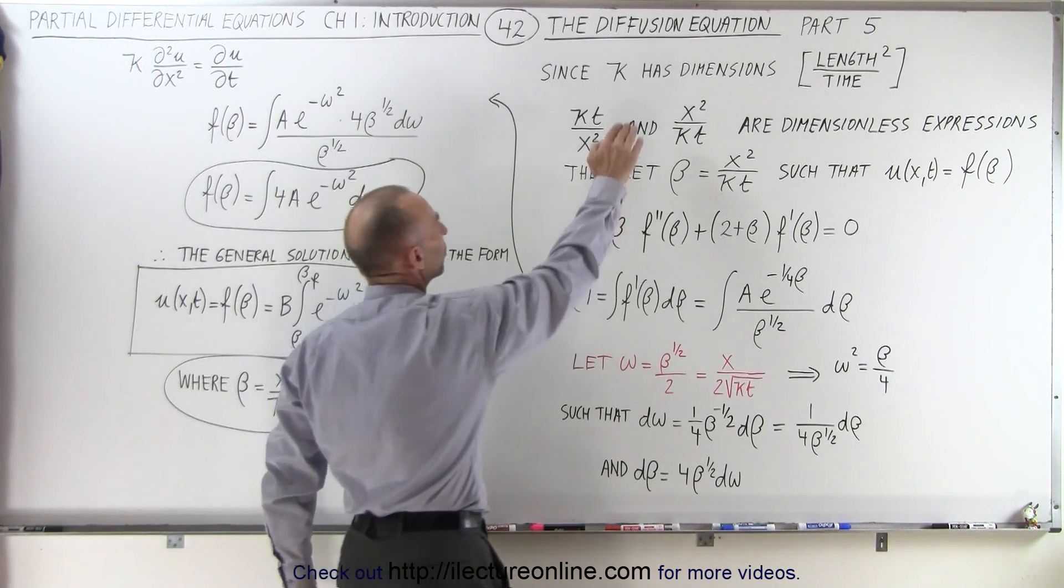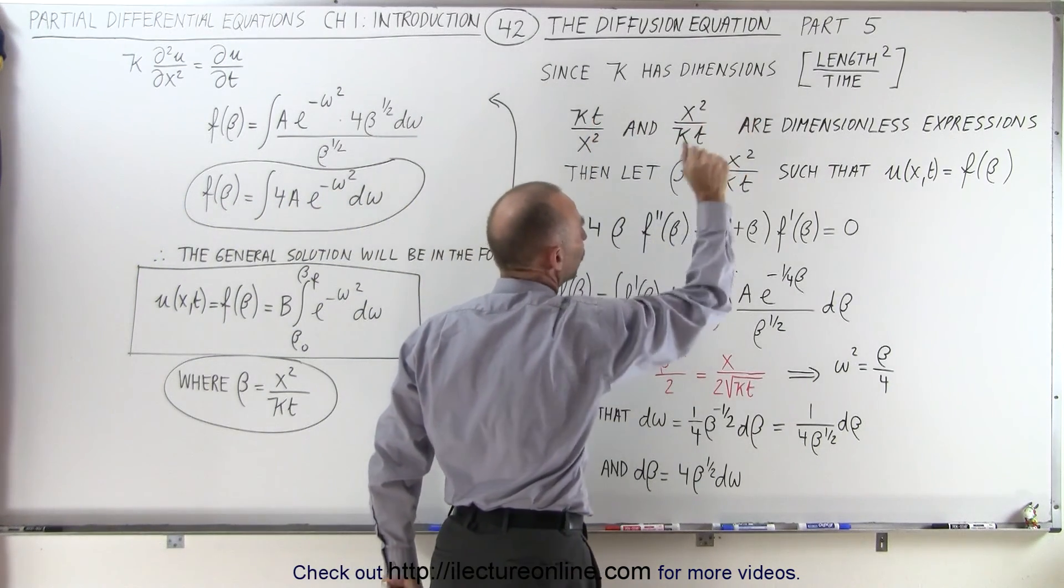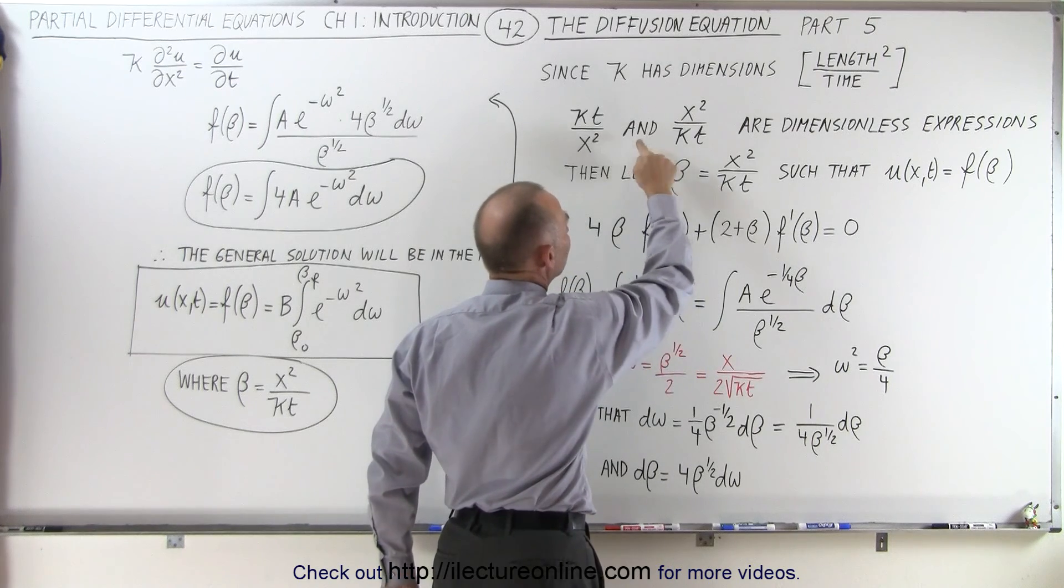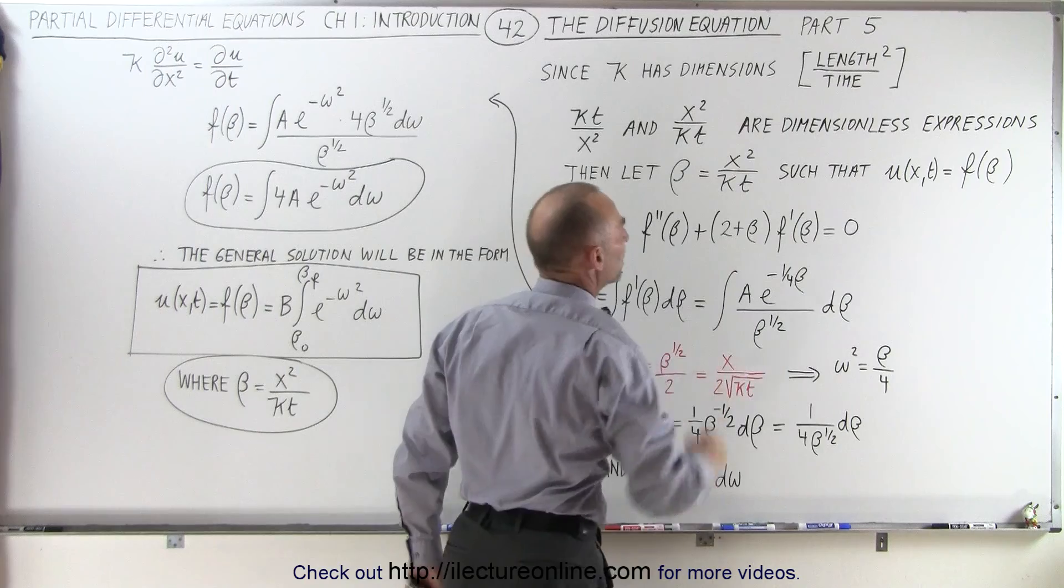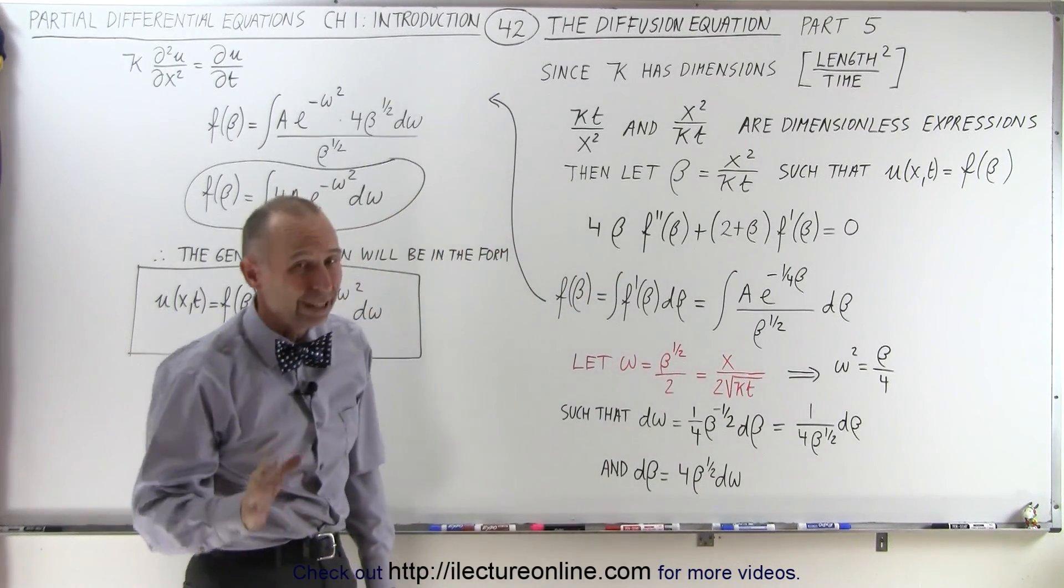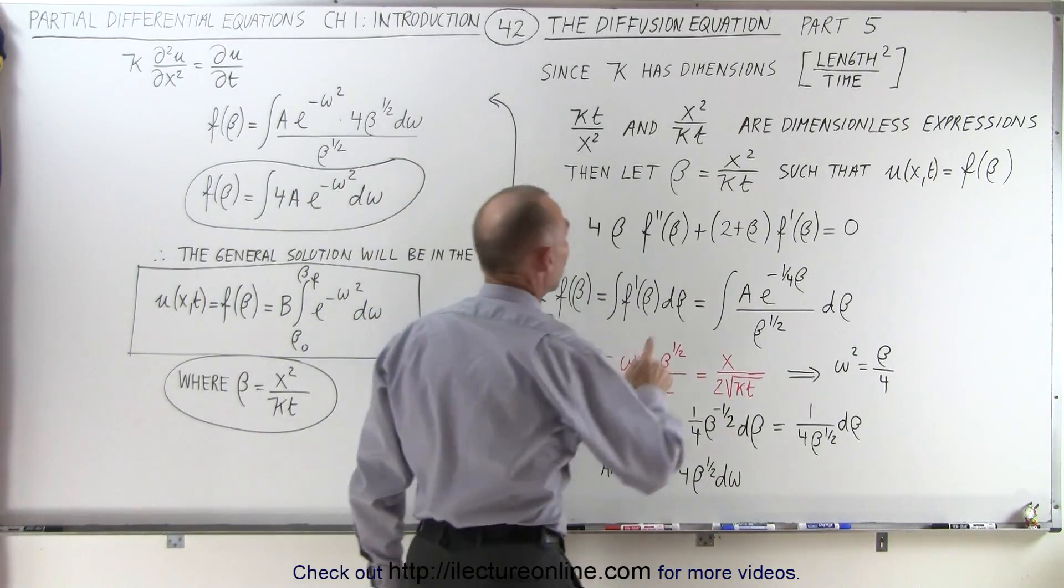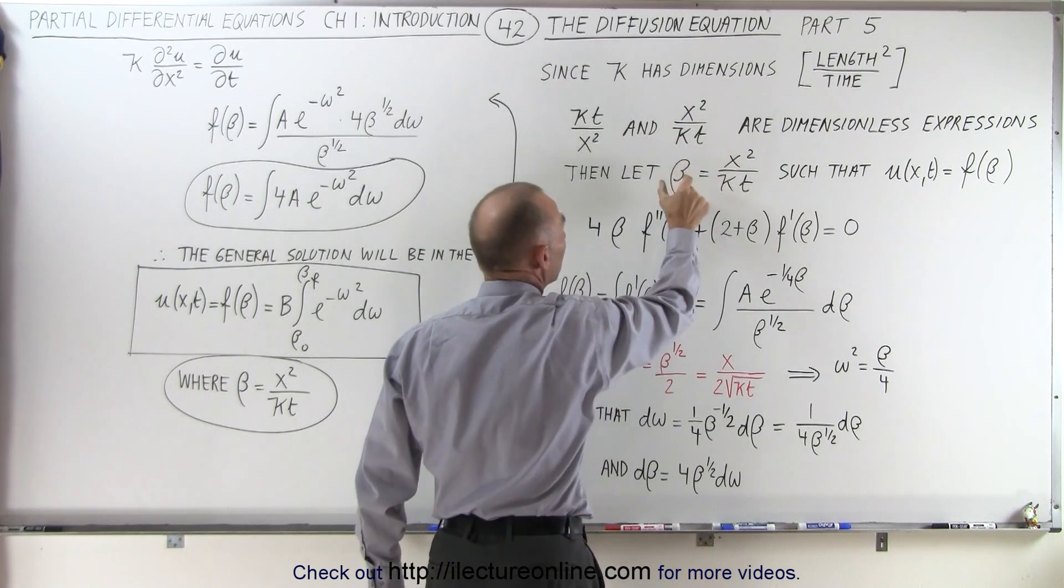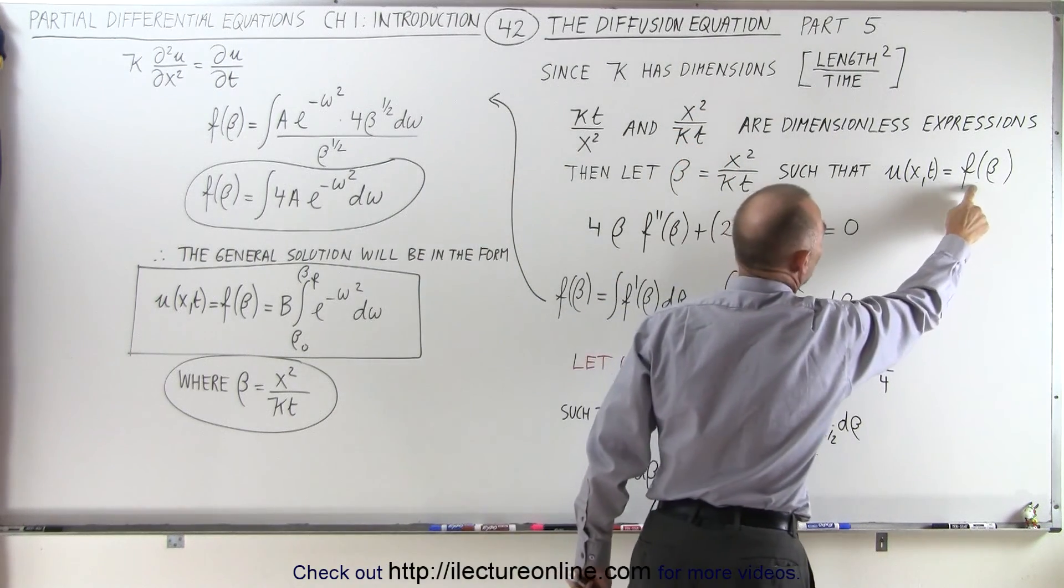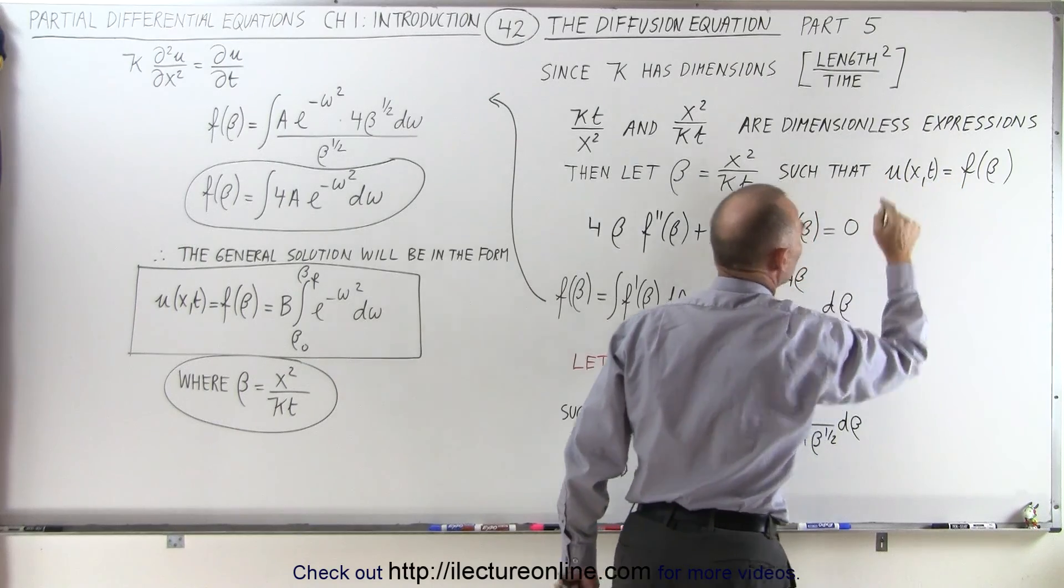We realized that k was some constant that had dimensions of length squared over time, so if we wrote it inside an expression of x squared over kt, this expression would be dimensionless. And therefore we're looking for a solution where beta, being equal to this expression x squared over kt, would be the variable of which we have a function that would be equal to the solution of u.